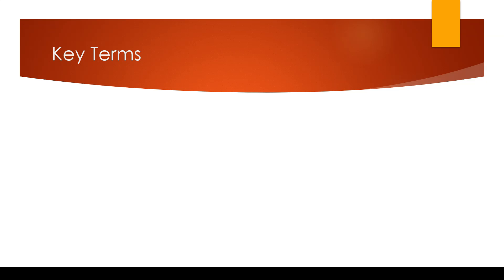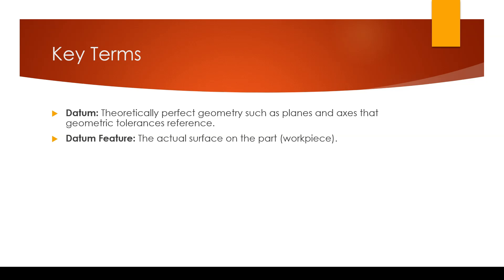Before we continue any further, let's consider some important terms. So far, we have been referring to datum features, but the datum is the theoretical plane that is being referenced. This is the plane, axis, line, etc. that represents the true geometric counterpart or the mating part in the assembly. The datum is a theoretically perfect geometry that represents the counterpart of the surface.